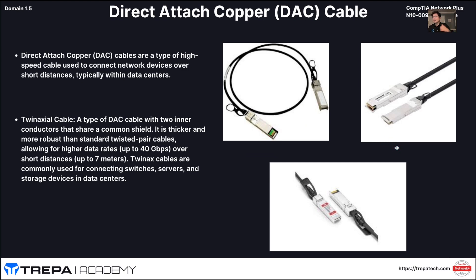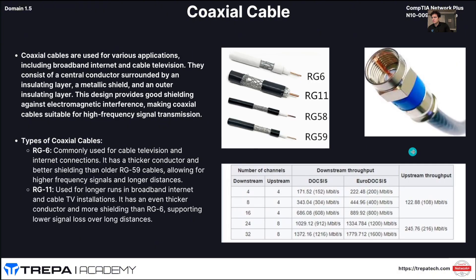Then we have direct-attached copper (DAC) cable — like Twinax cable. This is a type of DAC cable with two inner conductors sharing a common shield. Its main purpose is achieving high data rates, but only over short distances. You see Twinax a lot in data center racks — for example, connecting a storage area network to a compute chassis where you want those very high throughputs with copper.